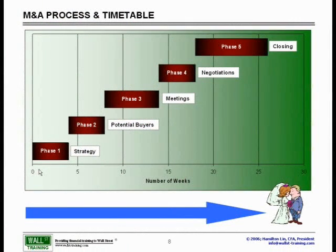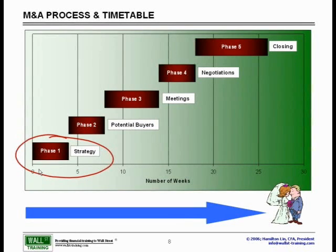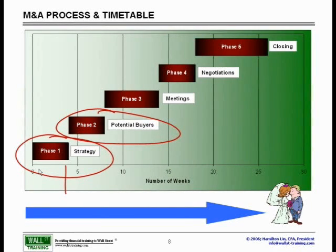The first phase is the strategy phase, in which you will strategize — that might take anywhere about a month or so. The potential buyers communication phase might take yet another month. Meetings might take another month or two, primarily due to scheduling conflicts.